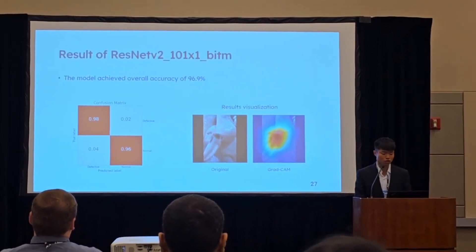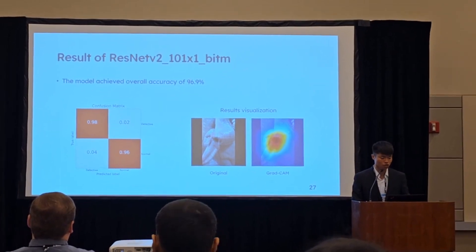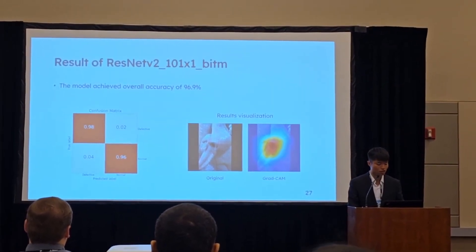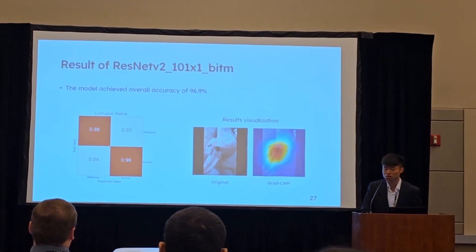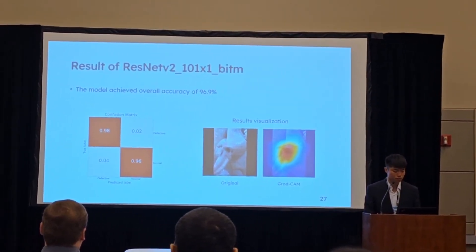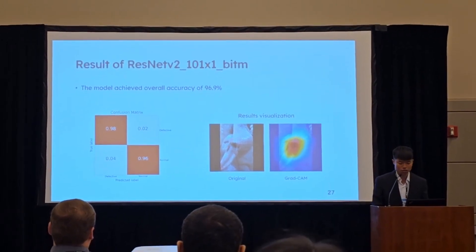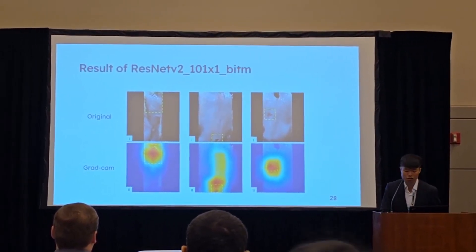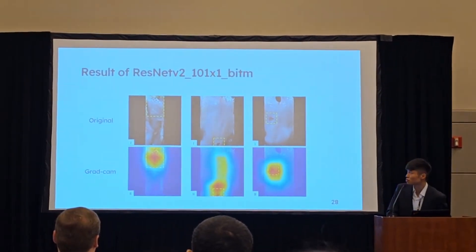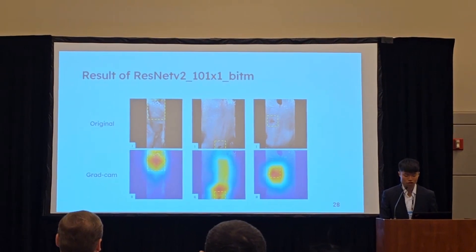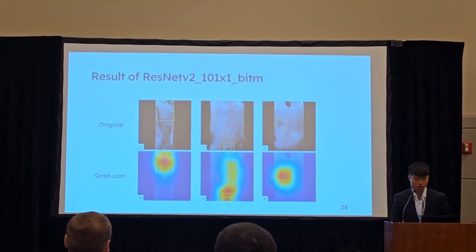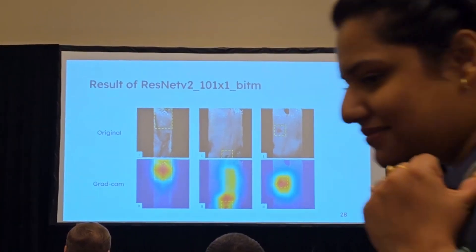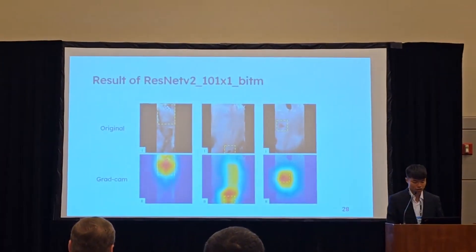This is the result of the ResNet V2 with BiT-M model. The model achieved an overall accuracy of 96.8%. The confusion matrix shows that the defective class accuracy is 98% and the normal class accuracy is 96%. We use a heatmap to visualize the model performance. This stage shows the results of three real cases: case 1 has a tear problem on the breast; case 2 has a skin defection problem at the bottom of the image; case 3 has a bruise problem on the breast. The heatmap below shows that the model can detect the defect parts correctly.